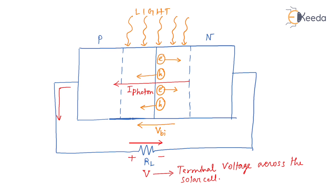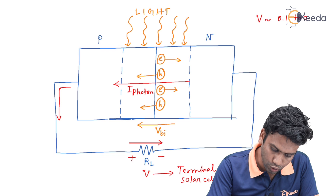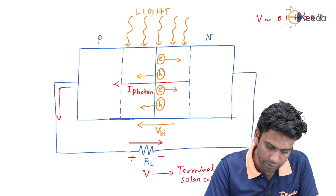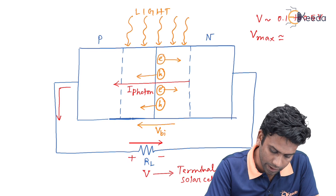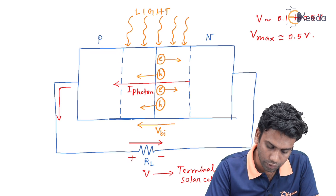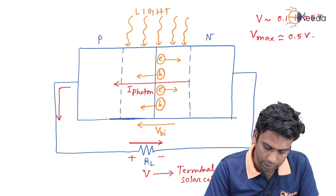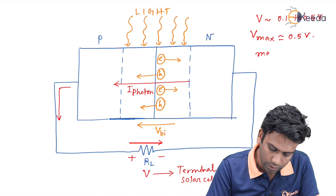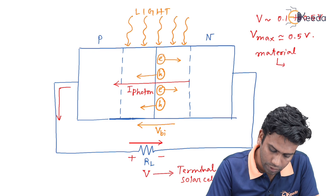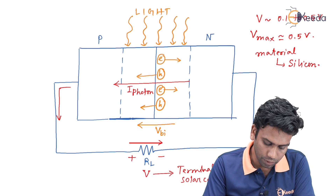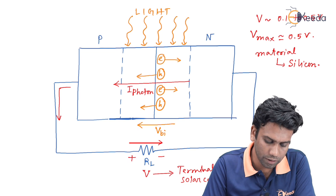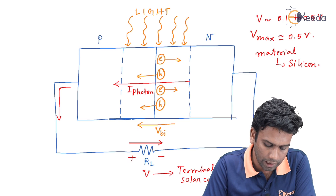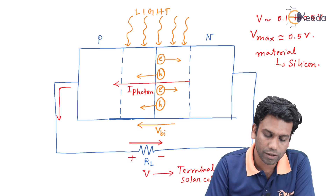Generally, the terminal voltage across the solar cell is of the order of 0.1 to 0.5 volts. The maximum terminal voltage of the solar cell V_max equals 0.5 volt. Solar cells are generally fabricated using silicon material. In this way, the solar cell produces a terminal voltage by the incidence of light, because the incident light produces a current I_photon flowing from n-side to p-side.